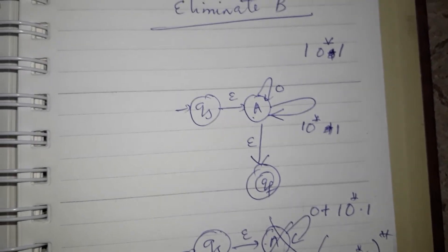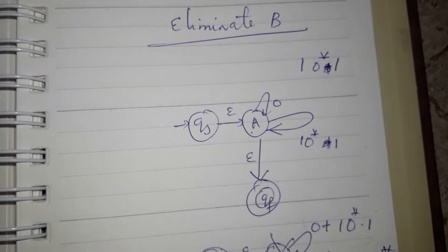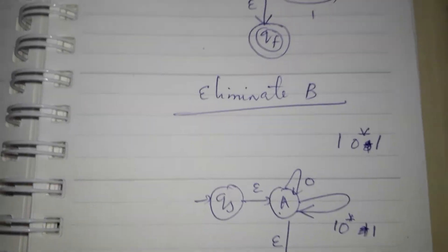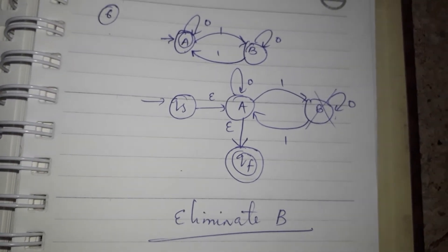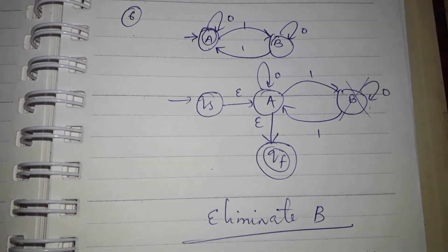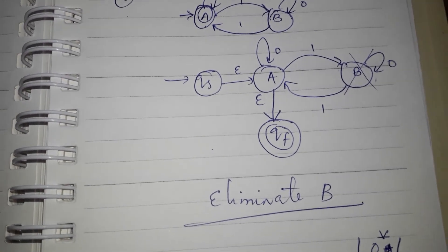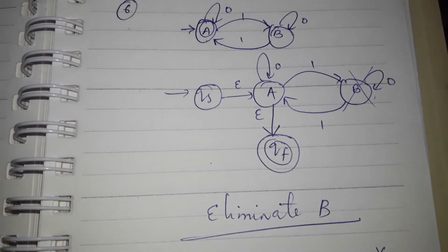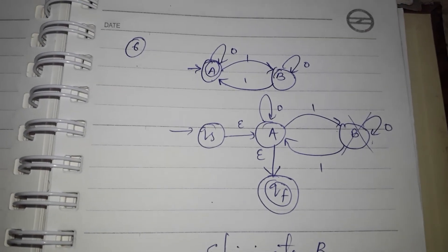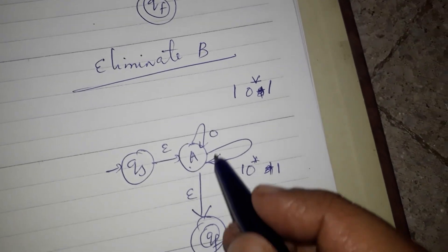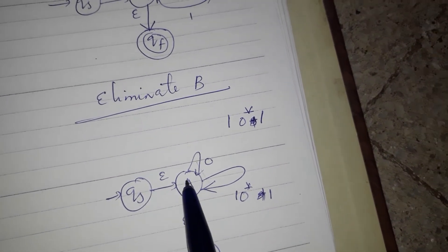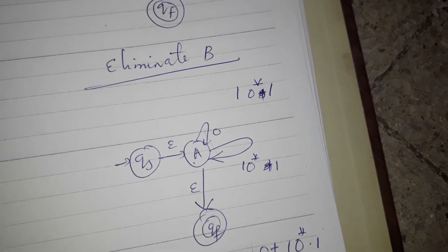This is the class on the state elimination method. If you want to convert a finite automaton to a regular expression, you can use the state elimination method — it is very easy. For example, if you have a question, you can use the state elimination method. In a university exam, you can use A, B, and so on. Here is the basic method.